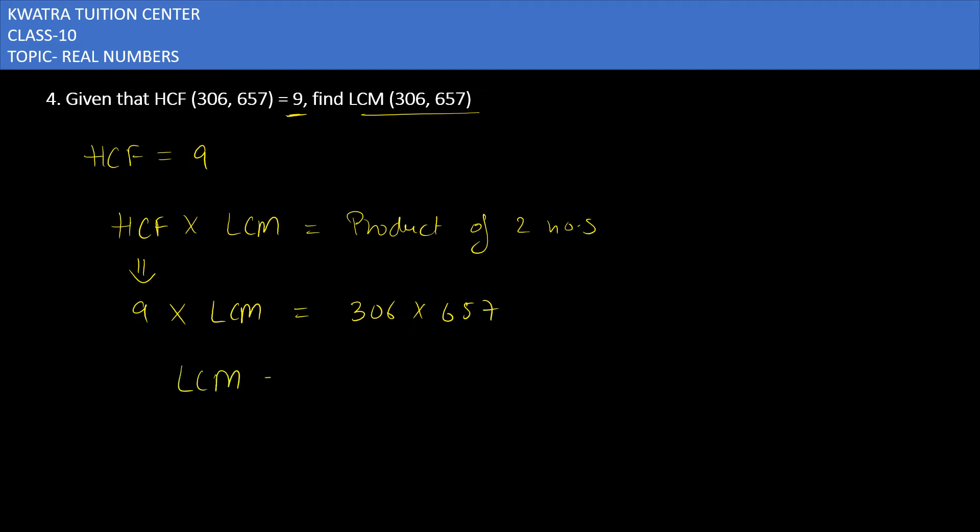Now what do you have to do? Move 9 to the right side because it's in multiplication with LCM. So 306 times 657 divided by 9. And you can reduce 306 with 9 because it is divisible by 9.